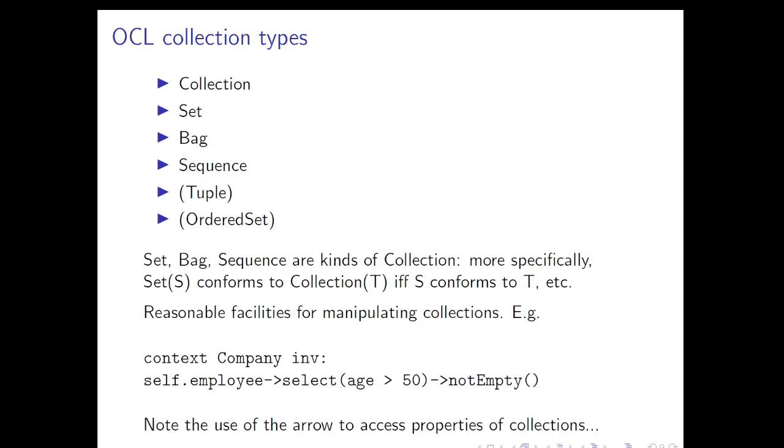OCL has collection types. It has a whole bunch of collection types. As before, I've bracketed the ones I don't expect you to know about. Set, Bag, and Sequence are kinds of Collection. They're not going to give you any great surprises. There's a notion of conformance, and you'll find that Set(S) conforms to Collection(T) if S conforms to T. Think about that for a moment, but it does kind of make sense.